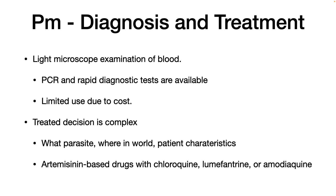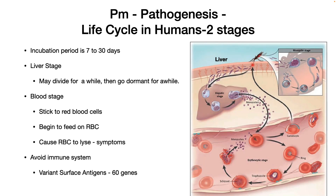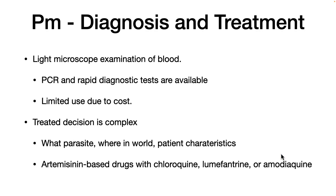How is malaria diagnosed? In the classic diagnosis, you take a blood sample and examine it, looking for red blood cells that have the malaria parasites in them — you can actually see this under the microscope. There are now rapid diagnostic tests available based on PCR or other rapid methods, but they are of limited use due to cost. Many of the areas where malaria is prevalent, it's too expensive to run these kinds of tests.